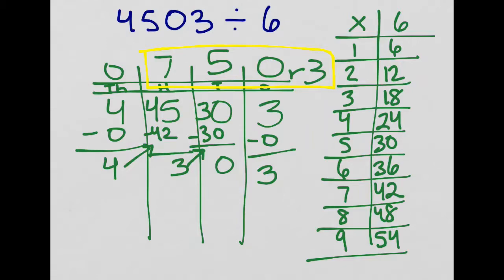Don't get tricked — my answer is 750 remainder 3. People are always tempted to say 75, but my seven is in the hundreds place, my five is in the tens place, and there's a zero in the ones place. The number I have is 750, not 75. So make sure if you have a zero in your ones place, you don't cut it off. 750, remainder 3.